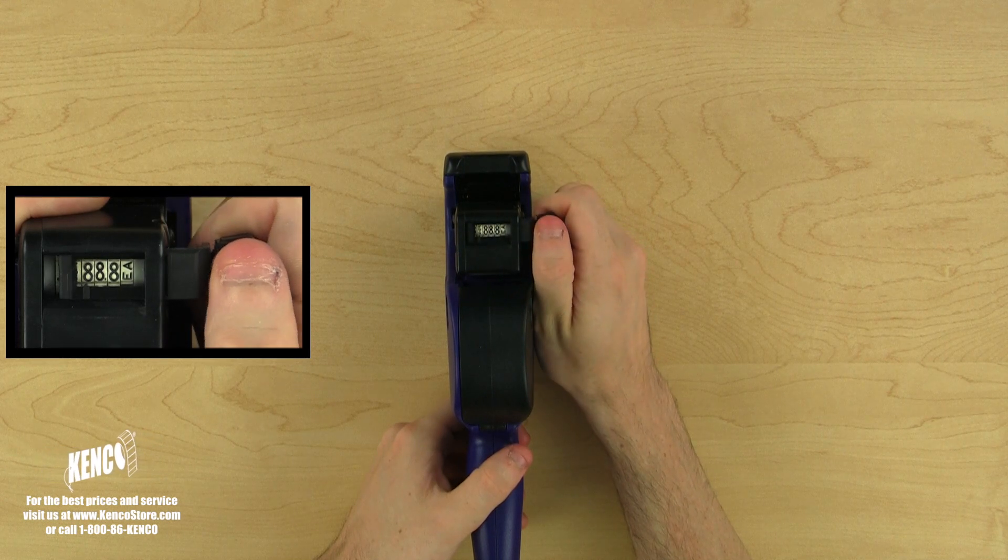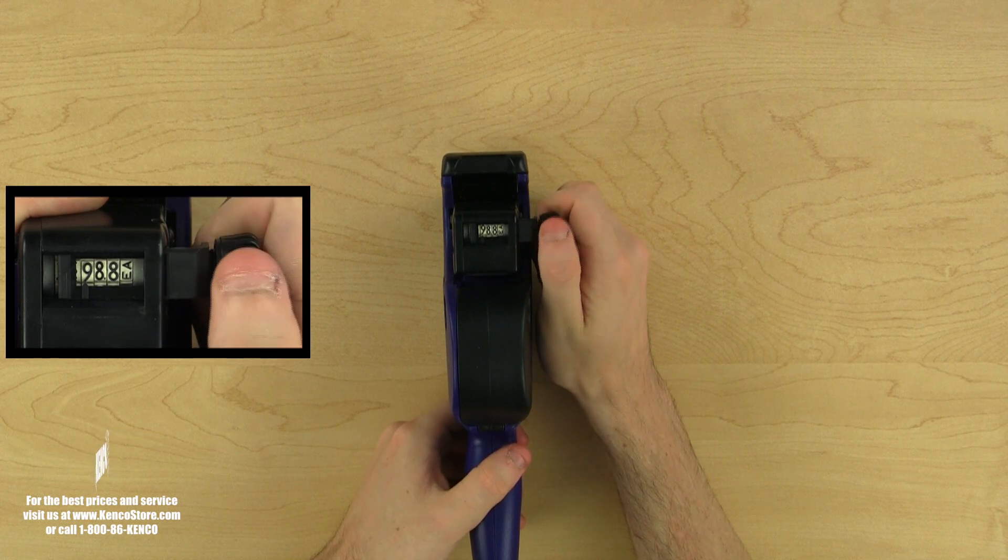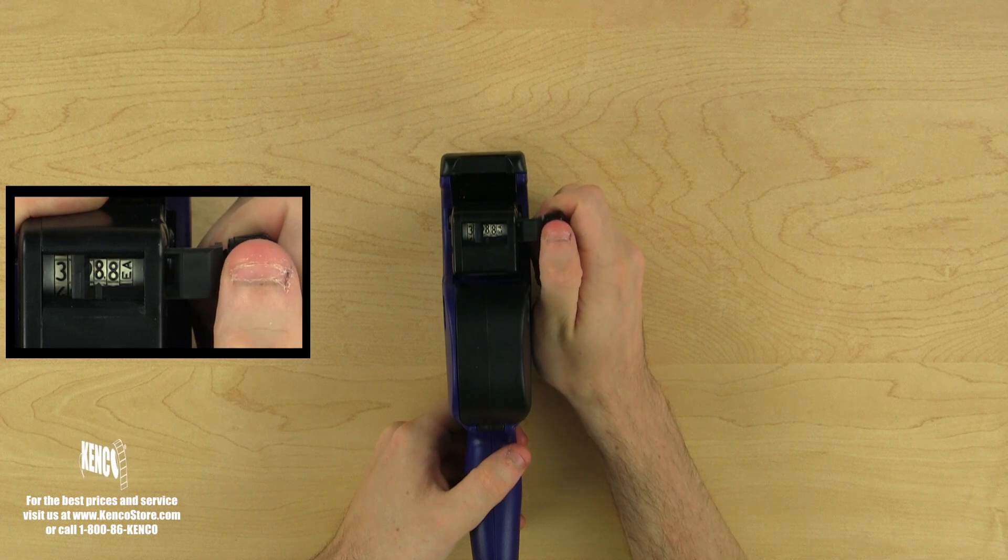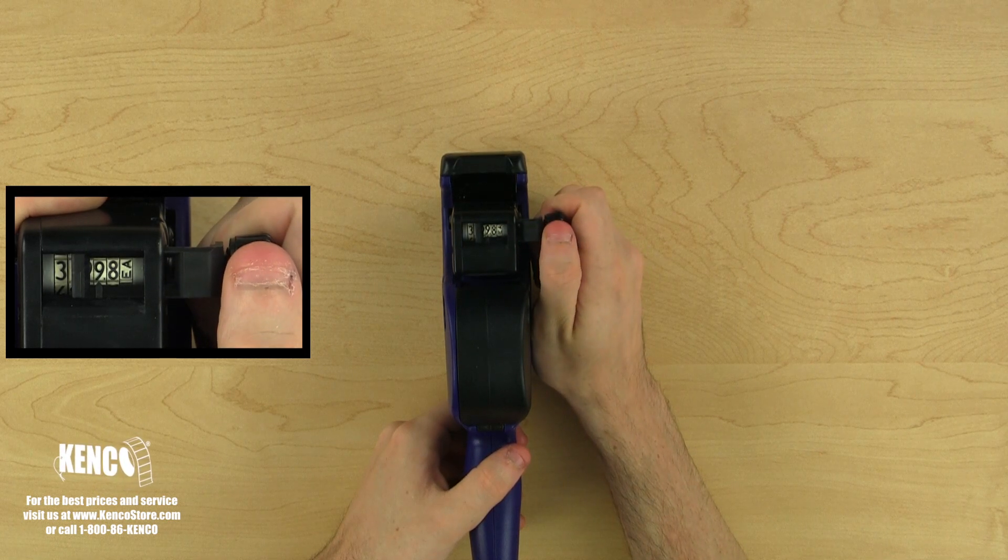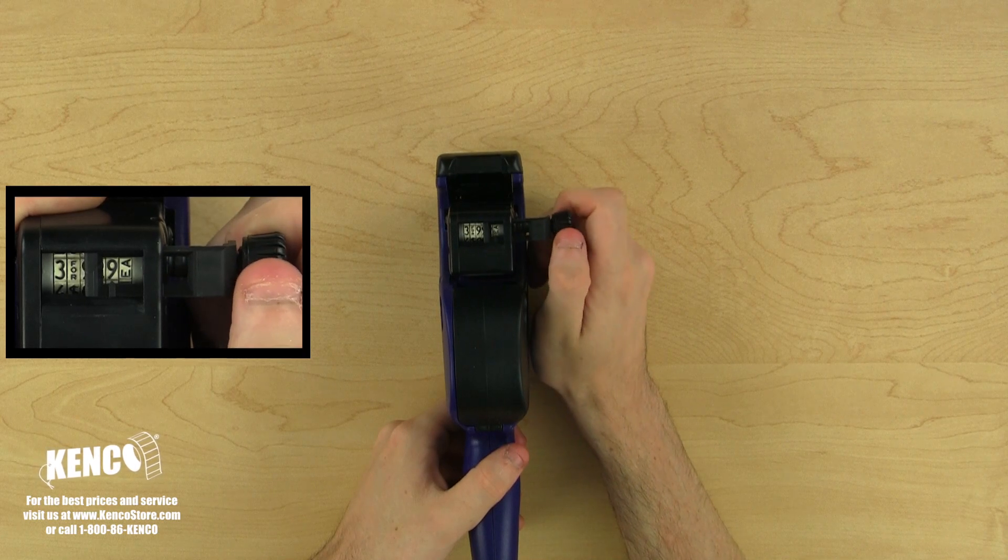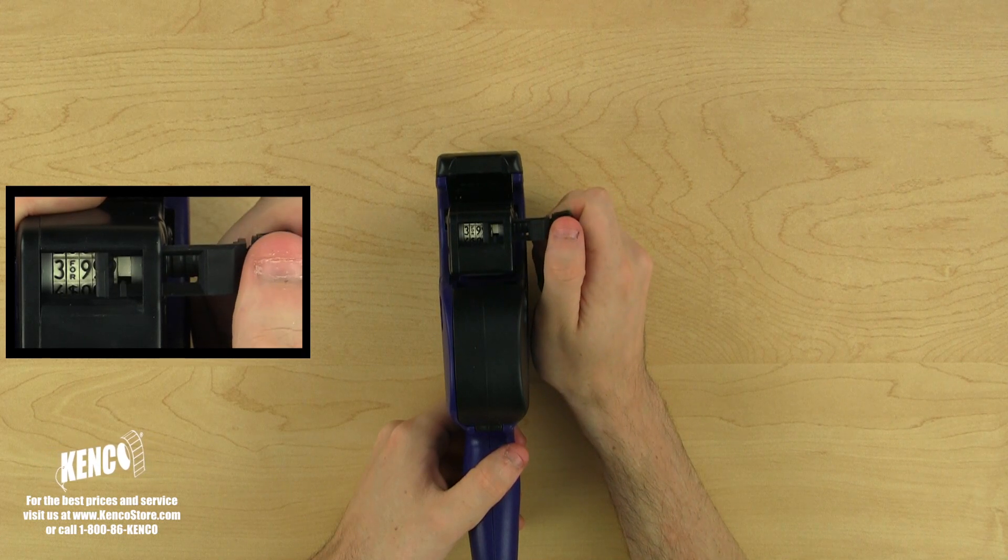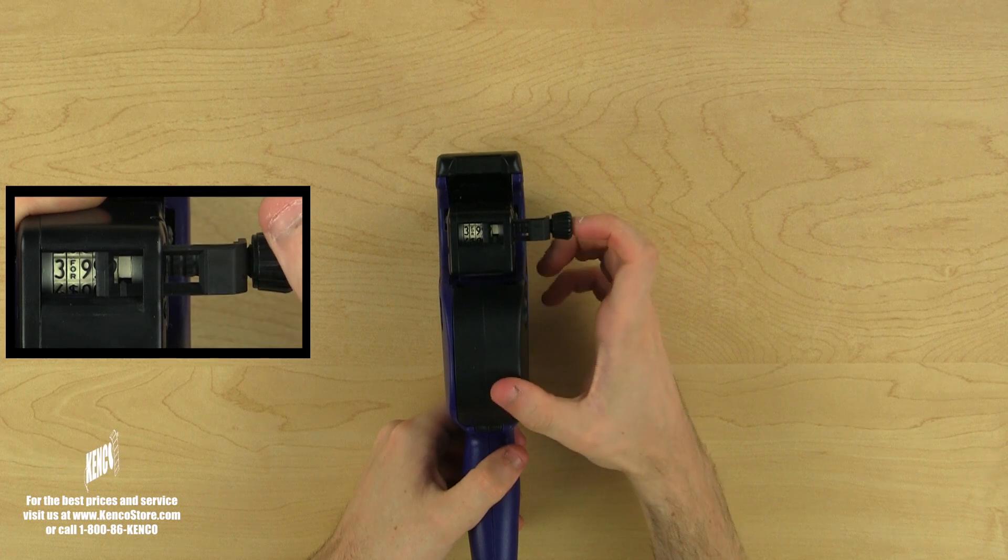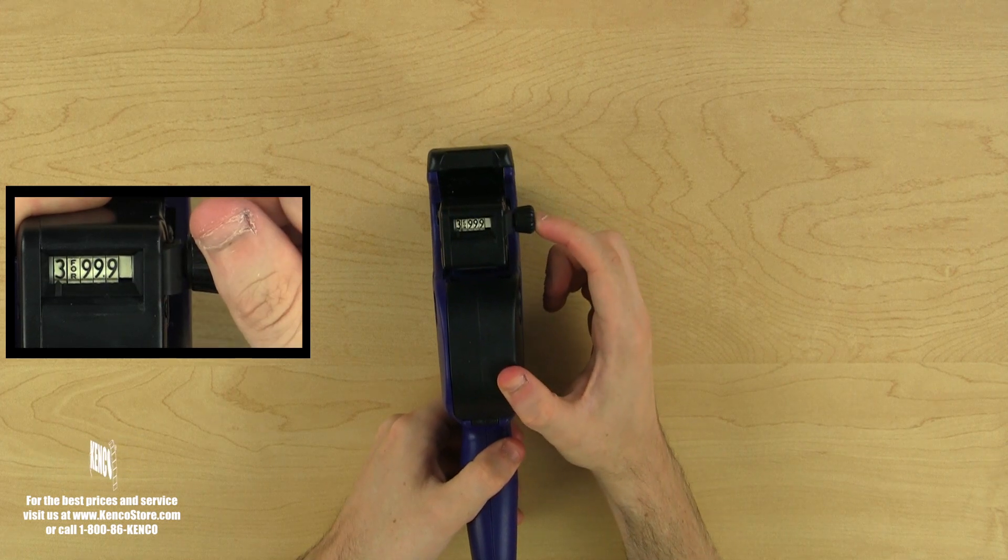To move to the next set of digits, simply pull the adjustment dial and the adjustment indicator will follow you to the digit you are currently adjusting. To dial in a blank space, simply rotate the dial knob to the white blank space. When you have finished adjusting your label gun, be sure to push the adjustment dial back into the print head and you're all set.